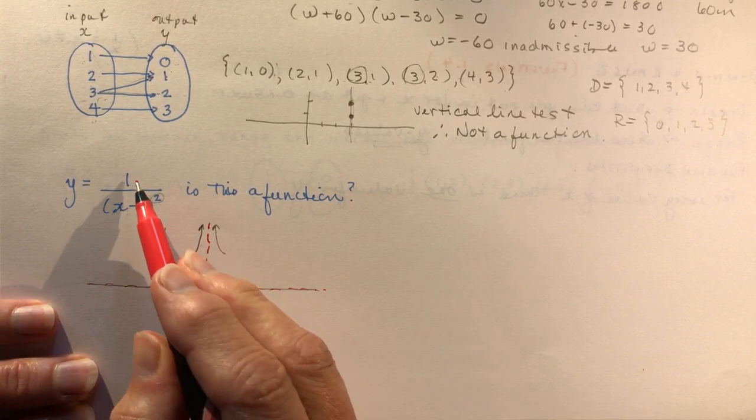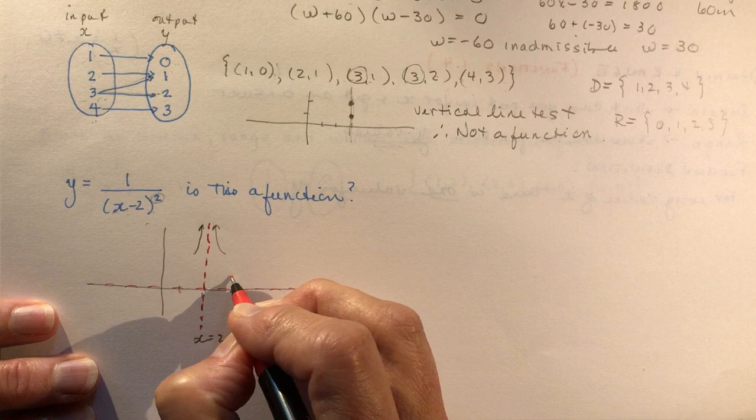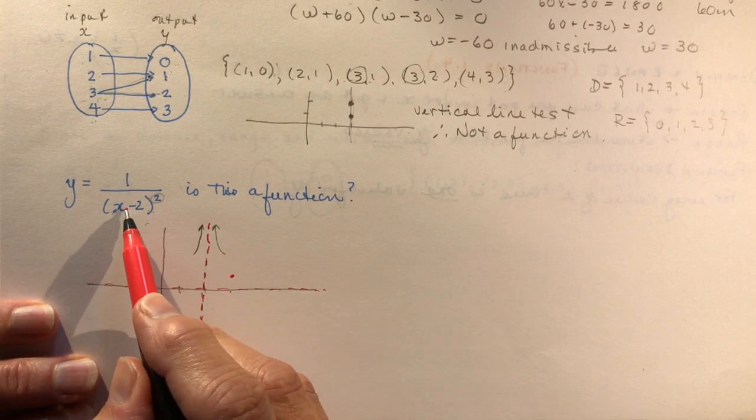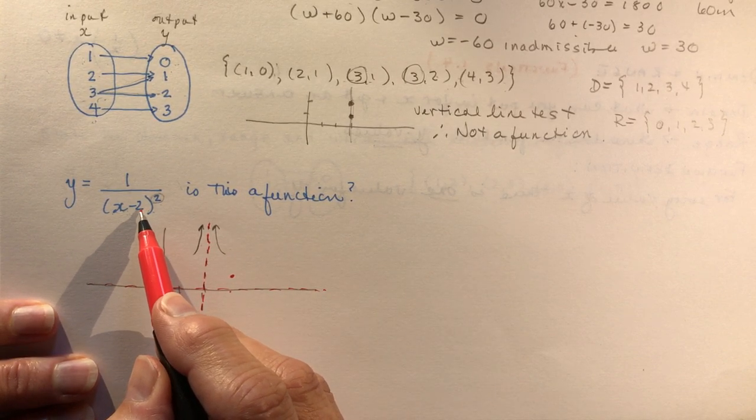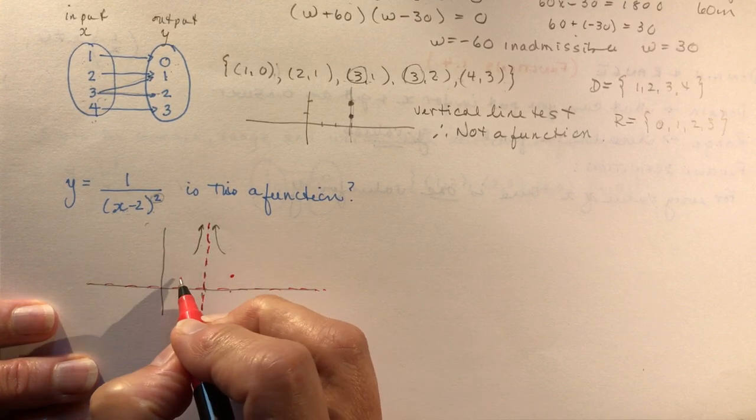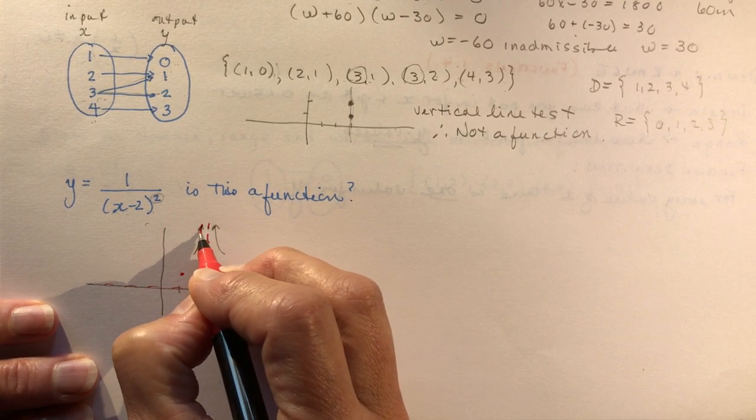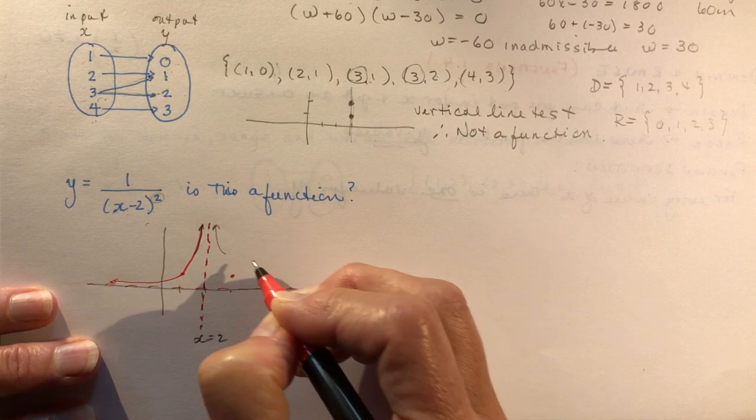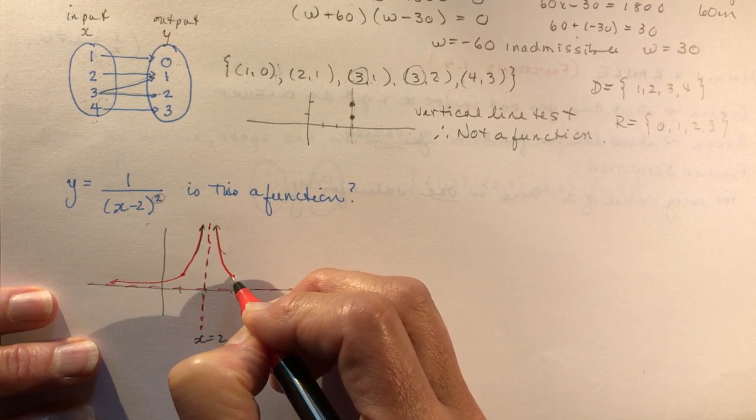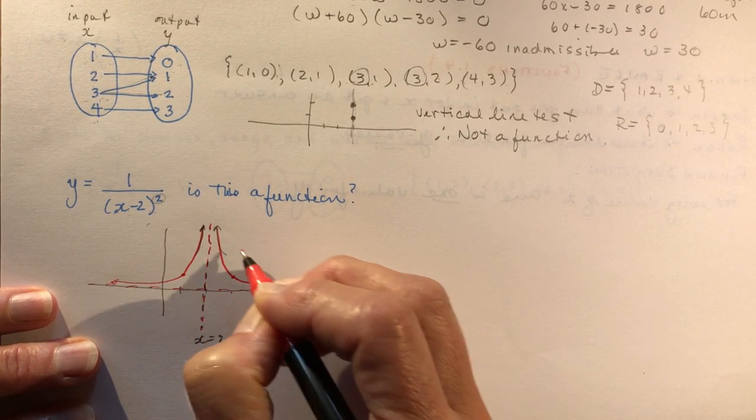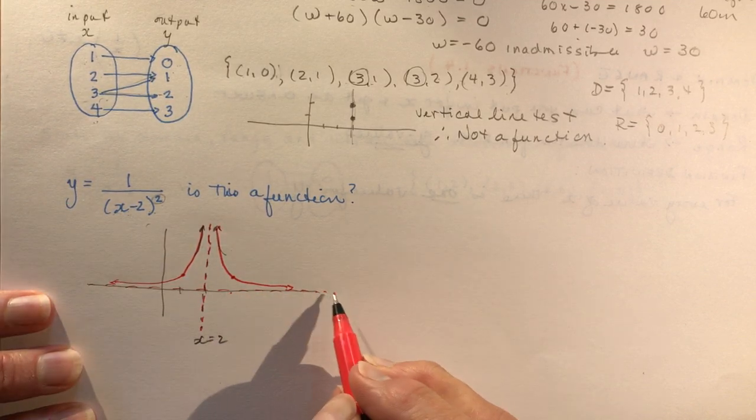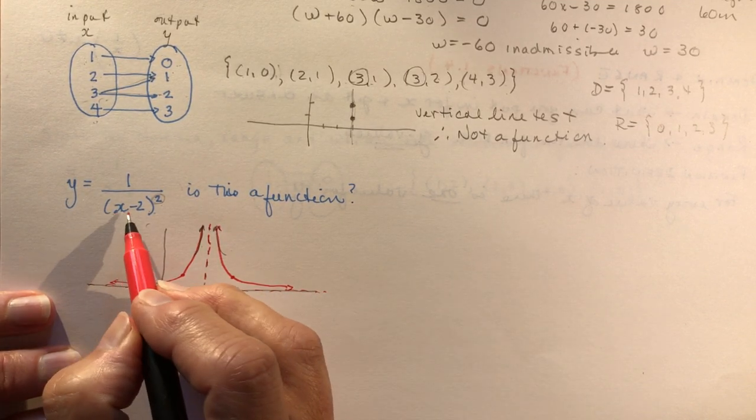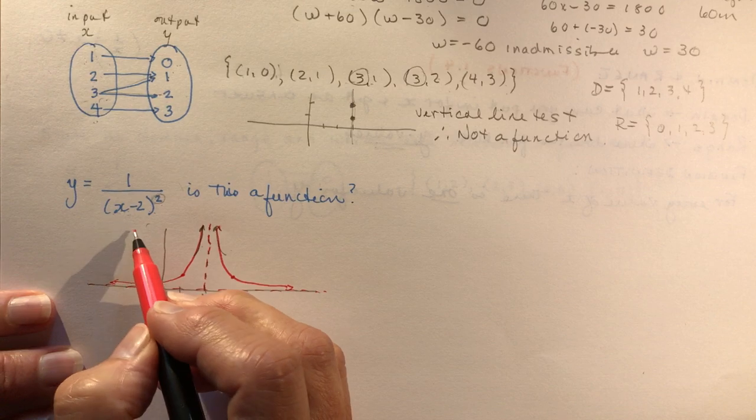So I could plug in some values. If I put in say three, so I'd have one. So when I have three I would have one. And if I put in one here, one minus two is negative one. Negative one squared is also one. So it's going through like this. And as I use larger and larger numbers, the y values are going to get smaller and smaller because you're dividing by a bigger number.